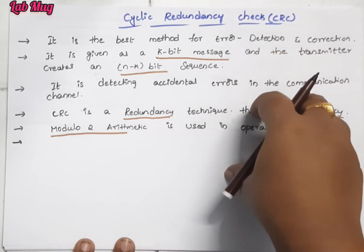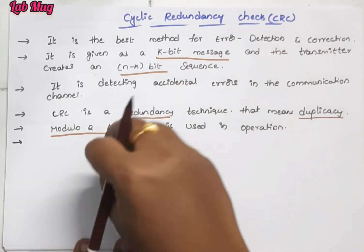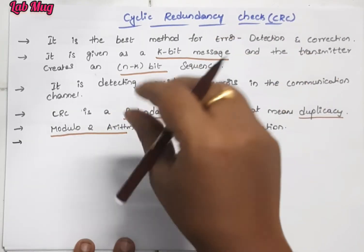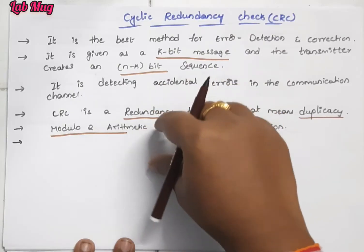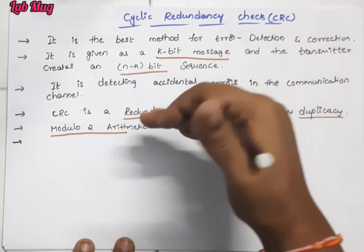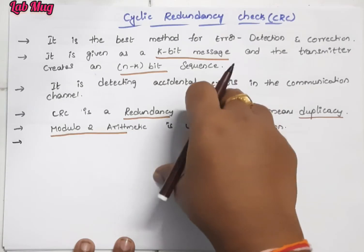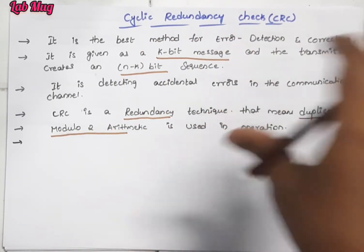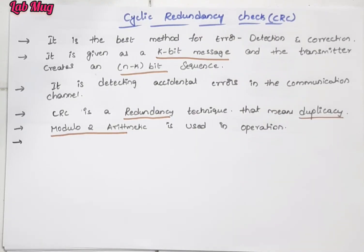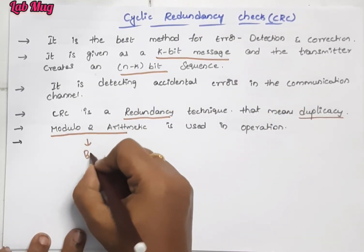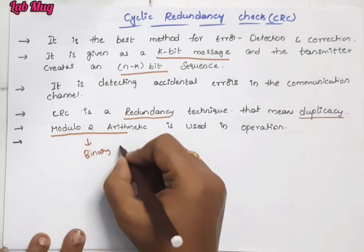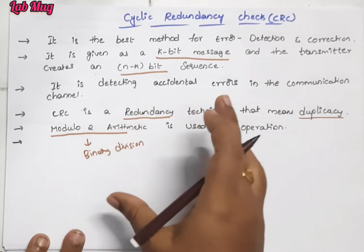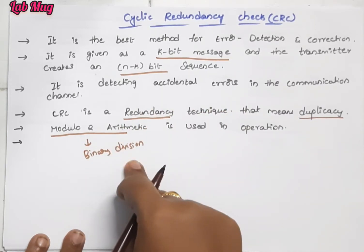We will get the sending side data and apply Modular-2 Division to it. We will get the result, then send that result to the receiver side. Again, the receiver side will do the same operation. After that, both results are compared to check for errors. This operation is called binary division.